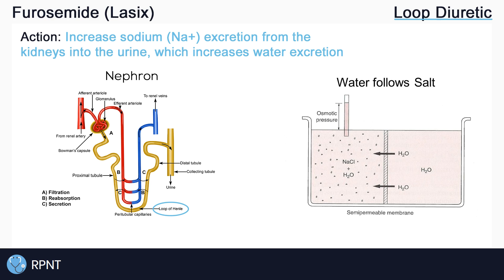Now the nephron is very complex, but simply put, the loop of Henle plays an important role in reabsorbing or keeping electrolytes like sodium in the body. It is normally responsible for reabsorbing up to 25% of the sodium that passes through the nephron, which normally helps to retain fluid. But furosemide will inhibit this reabsorption of sodium, which increases sodium excretion and water excretion follows.